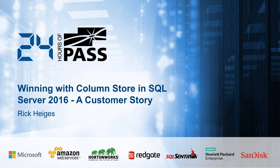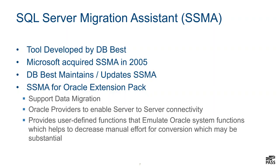We're going to see how the magic of the ColumnStore really made its debut here. Whenever you want to do a migration from one data platform to another, you use the SQL Server Migration Assistant. This was originally developed by DB Best, and Microsoft acquired it in 2005. DB Best maintains the code. One thing that happens whenever you do a migration from Oracle to SQL Server is there's an extension pack — essentially a helper schema put into the database to reduce the amount of changes needed. For example, there's an emulator for certain Oracle functions and calls.